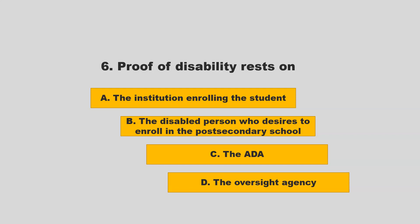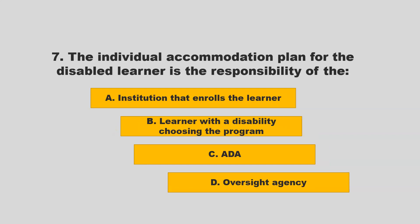Proof of disability rests on: A) the institution enrolling the student; B) the disabled person who desires to enroll in the post-secondary school; C) the school; D) the ADA or the oversight agency. If you chose B — the disabled person who desires to enroll in the post-secondary school — you are correct.